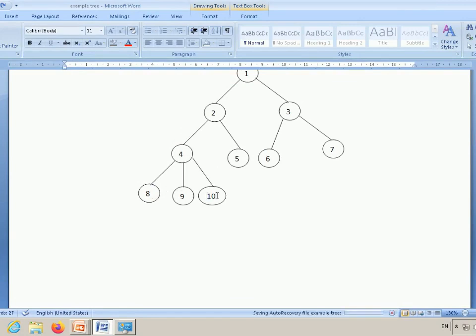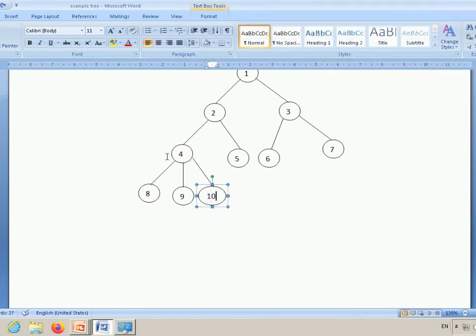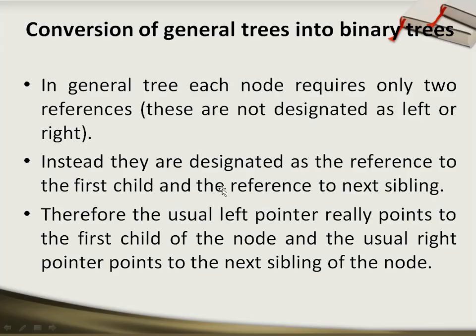For example, consider a node with children eight, nine, and ten. These are three different subtrees. Eight is the first child, then the next link is a reference to nine, and the next link is a reference to ten. Ultimately, there does not exist any concept like left and right subtree. Instead, the link is either to the first child or to the next sibling.